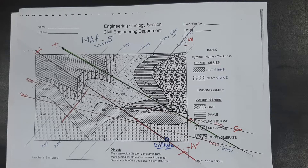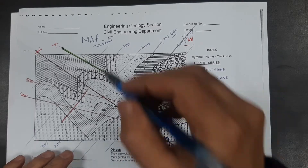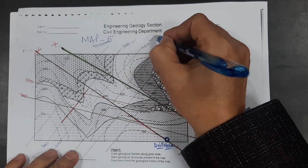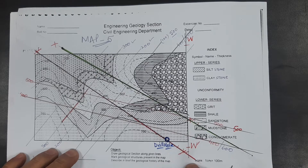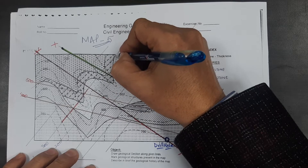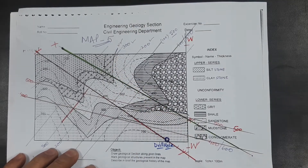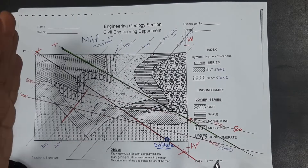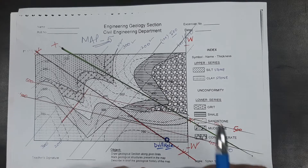You can see that I have drawn many strike lines. I am using two strike lines — at 300 and 200 — which are on the upper contact of the mudstone. I have selected this contact for drawing the two strike lines. One strike line can have two different values.